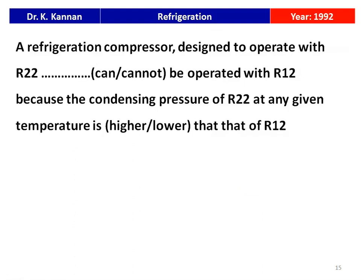The next question from the 1992 question paper: a refrigeration compressor designed to operate with R-22 — can or cannot it be operated with R-12? The correct answer is: it cannot be used. When a refrigeration compressor is designed for R-22, it should not be operated with R-12, because the condensing pressure of R-22 at any given temperature is higher than that of R-12.